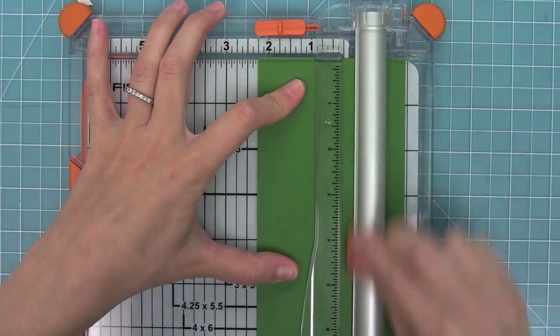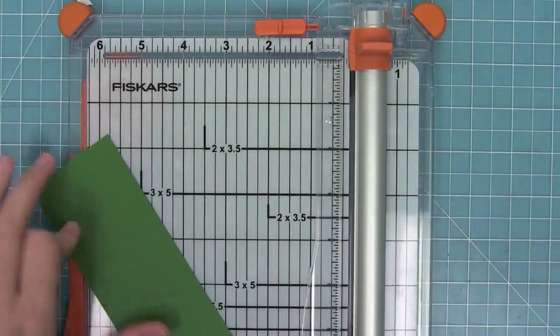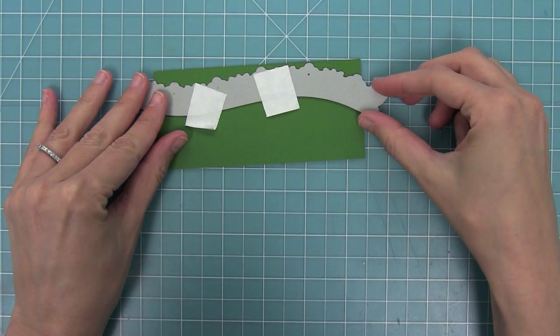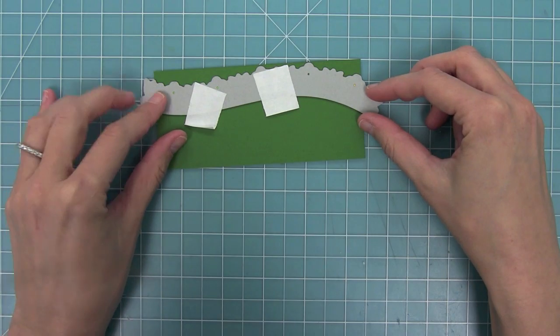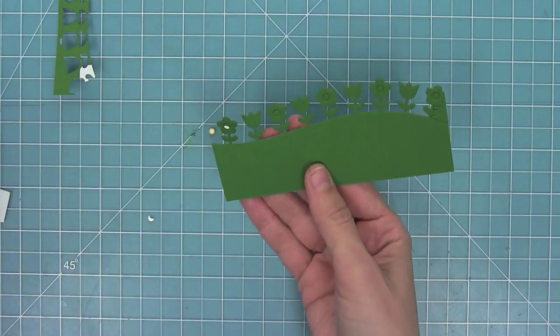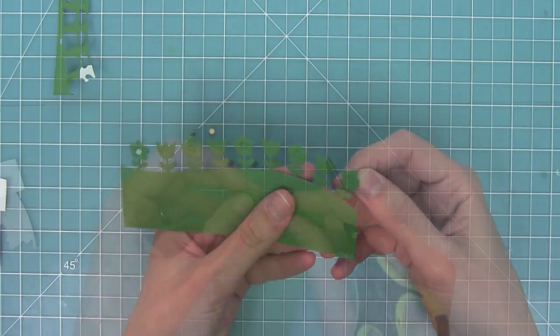Next I'm going to trim some Noble Fir cardstock to two and a quarter by five inches, and this is going to be the top part of our slider. I'm now using Lawn Fawn's flower border die right along the top of this great little green piece. You'll see these adorable little flowers now at the top.